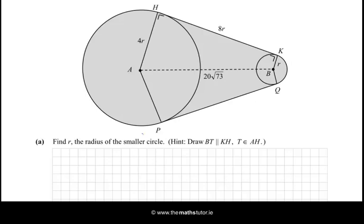Find R, the radius of the smaller circle. Hint, draw BT, the line from B to T. Well, we're not given T, but draw it parallel to KH. Okay, so what we need to do is draw this line here, parallel to HK. That should be a straight line, but it more or less is. So this point here must be T.